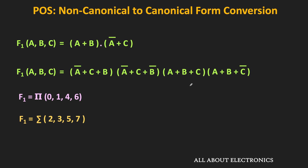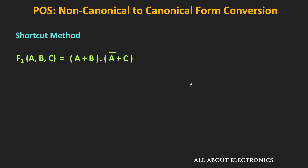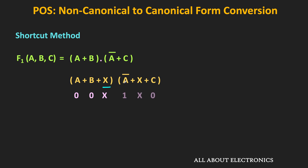Now let us see the shortcut method for POS conversion using the same example. In each sum term, replace the missing variable with X. The first term becomes (A + B + X) and the second becomes (Ā + X + C). In each term, if the variable is in true form, assign it value 0; if complemented, assign value 1; keep X as X. So the first term gives 0·0·X and the second gives 1·X·0.